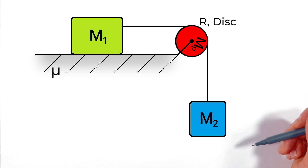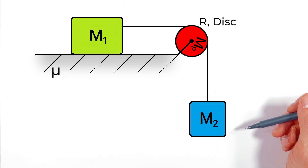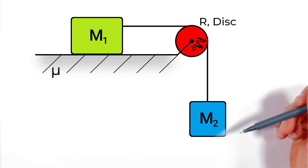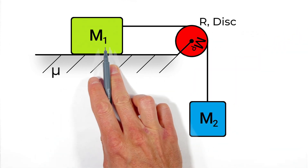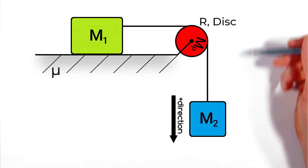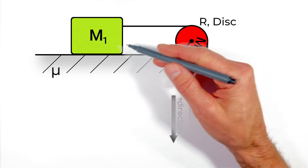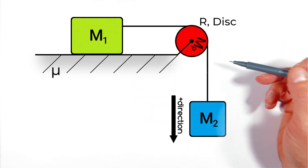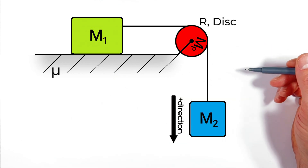The first thing we need to do is establish a positive direction. If this hanging block moves downward, that correlates to the clockwise rotation of the pulley as well as the motion of the surface block to the right. So we'll say that's the positive direction — anything pulling these objects to the right or downward is positive, and anything opposing that motion, like friction, is negative.